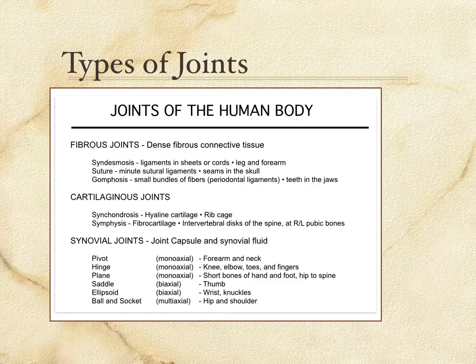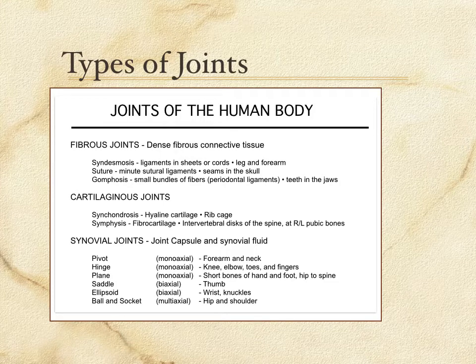So there are the fibrous and cartilaginous joints. We talked about each of their subtypes and where in the human body you might locate some of these joints. So as you can see in your handout, we now want to turn our attention to the synovial joints. Let's talk about these.